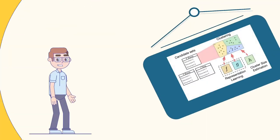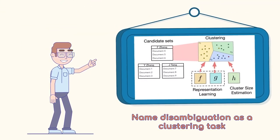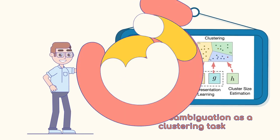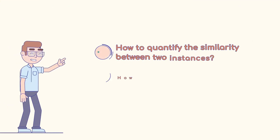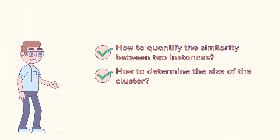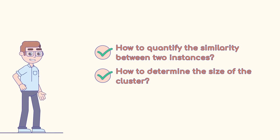Name disambiguation is usually formulated as a clustering task. As with many other clustering problems, we need to address how to quantify the similarity between two instances and how to determine the size of each cluster.